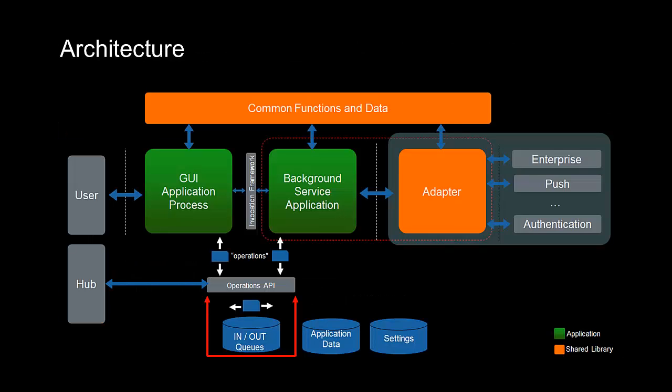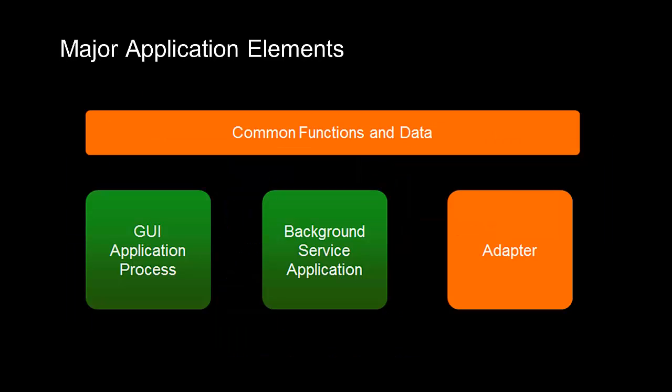So what does the architecture look like? At a high level, the architecture has two primary parts: a graphical user interface application and a headless service. There is also something called an adapter framework, some queues, an internal API called the operations API, and messages flowing around which we term operations. The BlackBerry Hub plays a role as well. If we peel away the details, we see there are really four major elements. The components in green — the GUI and background service — map nicely to the GUI and headless service components of a headless application, whilst the components in orange — common functions and adapter — map nicely to be a pair of shared libraries.